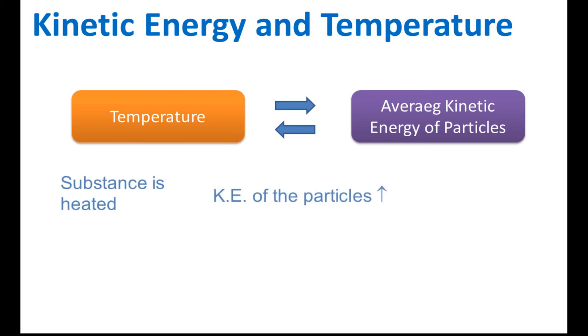When a substance is heated, the kinetic energies of the particles increase. Heated means that we give energy to the substance and therefore the kinetic energies of the particles increase and the temperature increases. If the substance is cooled, we take out the heat energy and the kinetic energies of the particles will decrease and the temperature will decrease. So this is the relationship between the temperature and the average kinetic energies of particles.